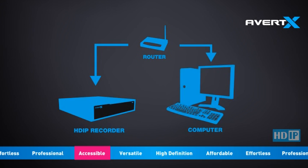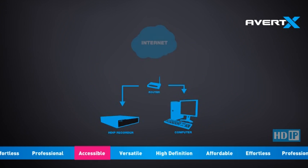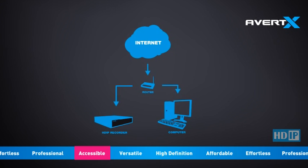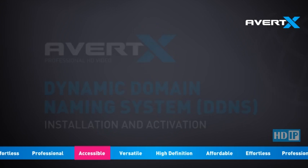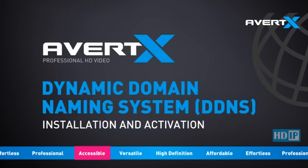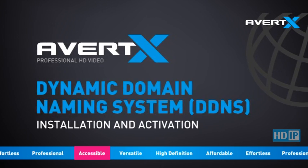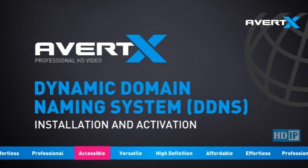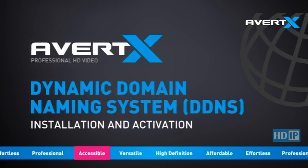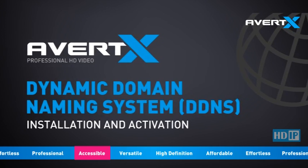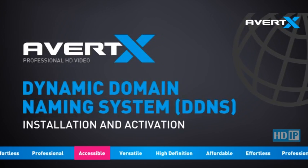In order to access your recorder from a location outside of your local network using the internet, your recorder will need a static IP address. Most internet providers do not supply this, but the Dynamic Domain Naming System, or DDNS, is a free service from Averdex to help you solve this problem.